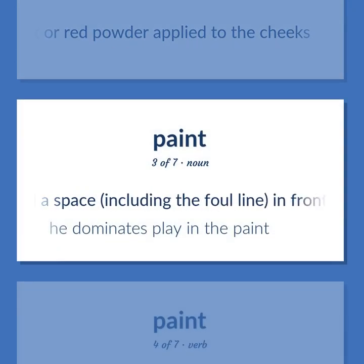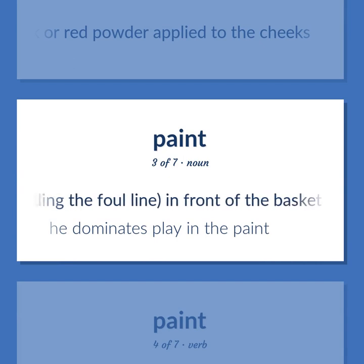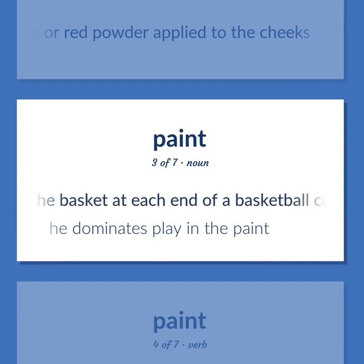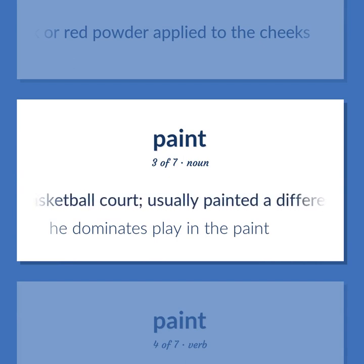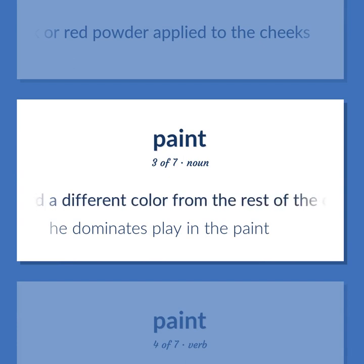Paint (Basketball): a space, including the foul line, in front of the basket at each end of a basketball court, usually painted a different color from the rest of the court. Example: He dominates play in the paint.